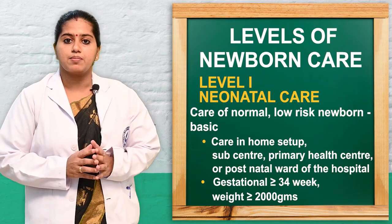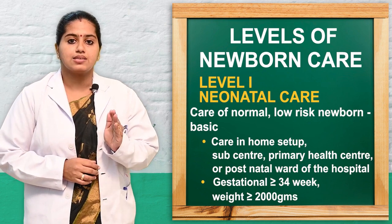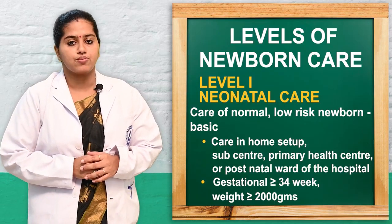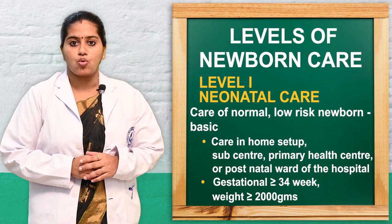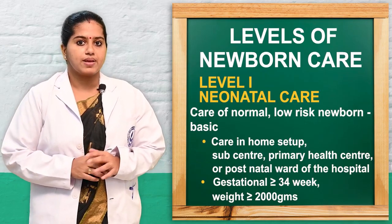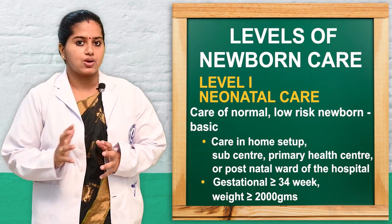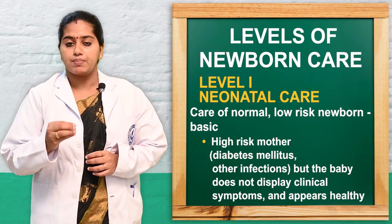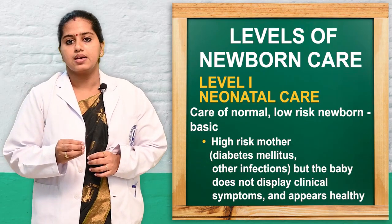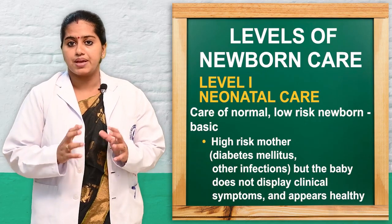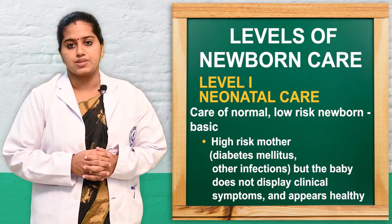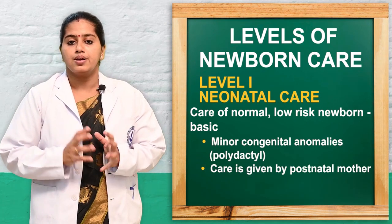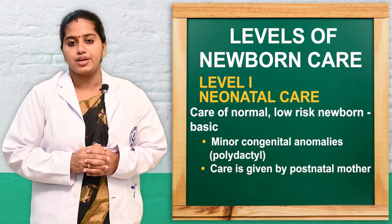For level 1, the baby's birth weight should be more than 2000 grams, gestational age more than 34 weeks, and Apgar score more than 7. The baby should be a normal healthy baby. Regular newborn care can be given. This includes babies such as those with mild meconium aspiration, babies born to diabetic mothers, high-risk or infectious mothers, babies without medical illness, and those with mild congenital anomalies such as polydactyly.